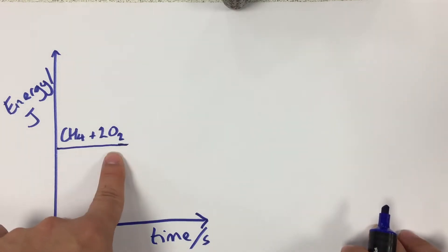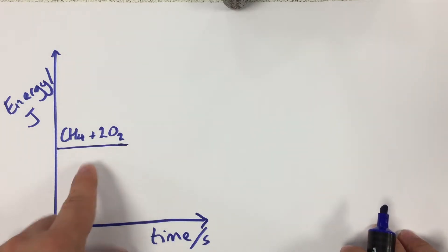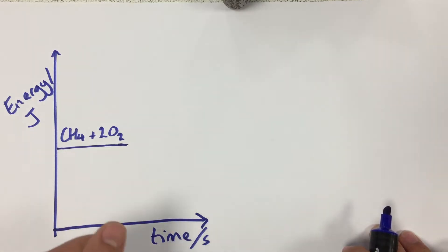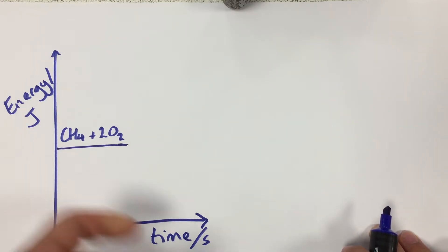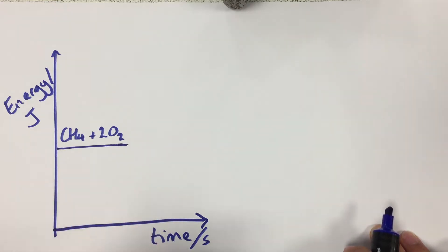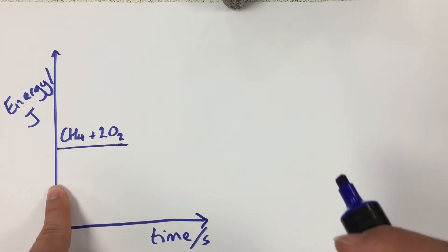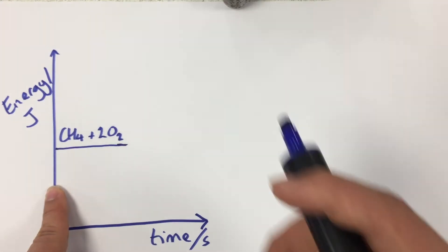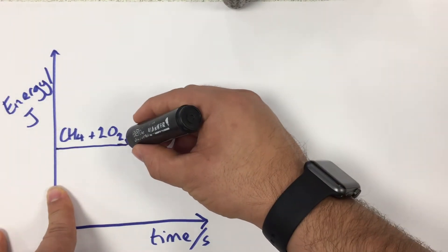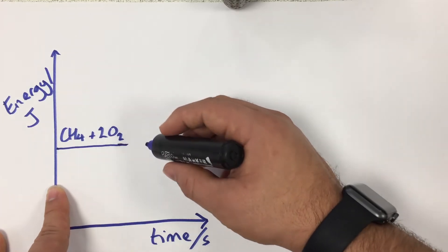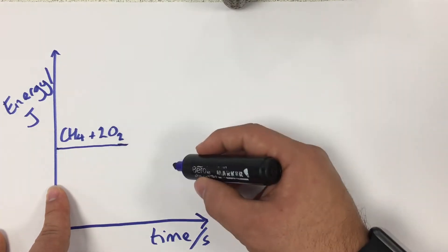Now to start the reaction we have to do something, because the reaction doesn't begin on its own. For example, if you turn a Bunsen burner on and you don't use a match or a splint to light it, the gas will mix but it isn't going to react. So we have to put some energy in to get the reaction started. This input energy is what we call the energy of activation.